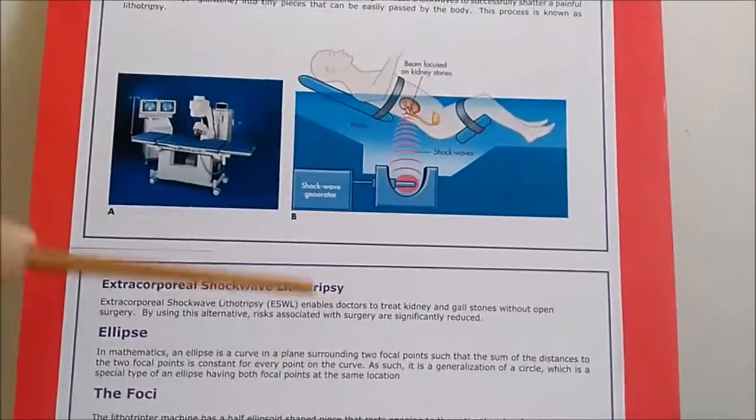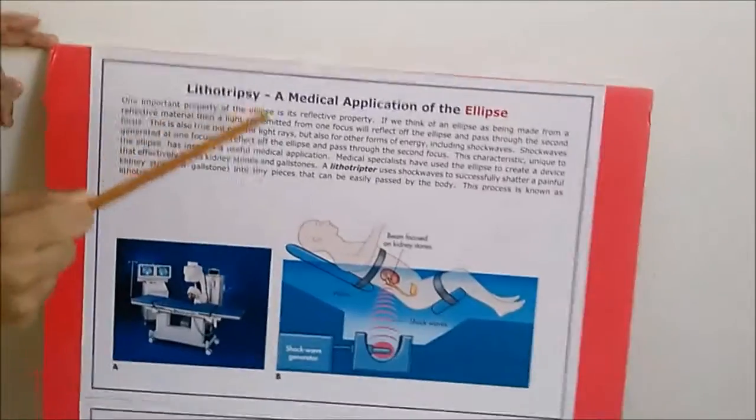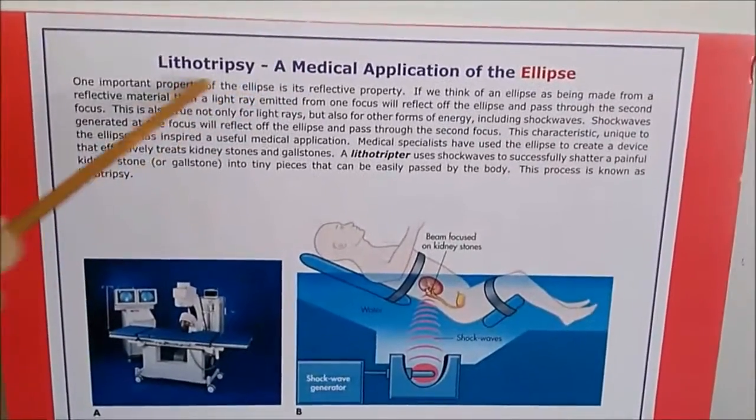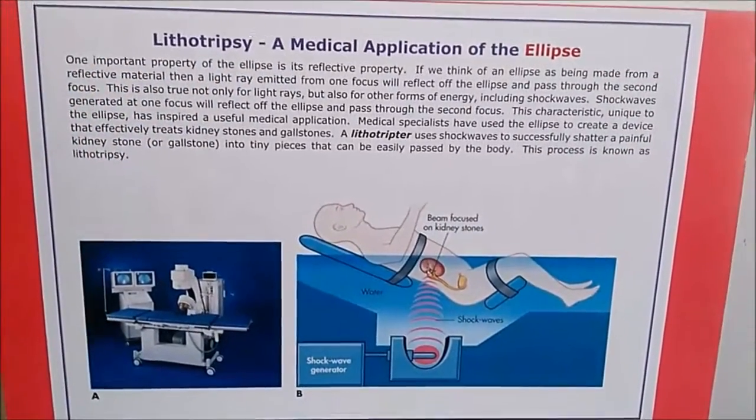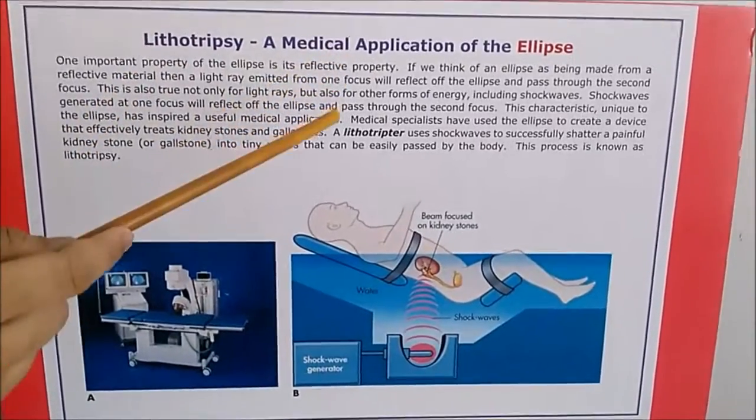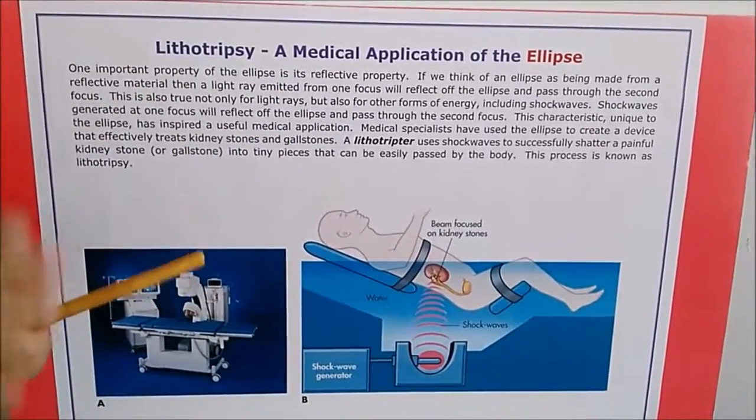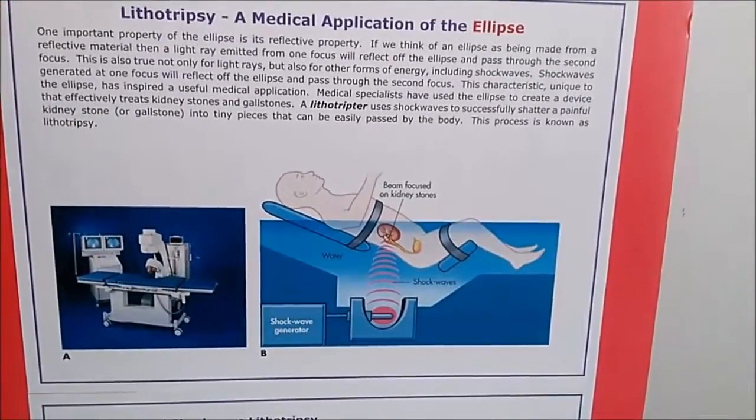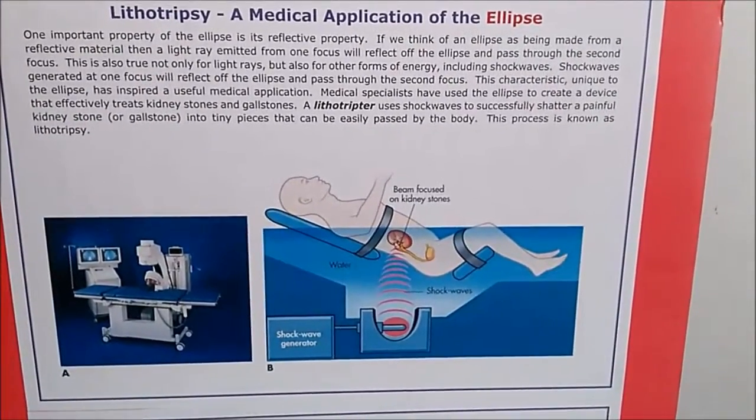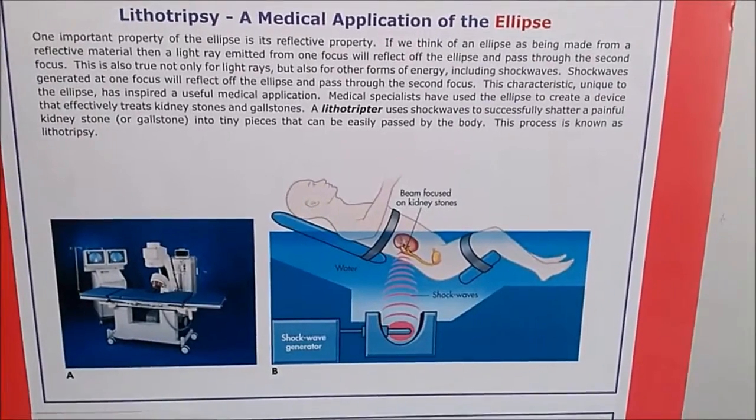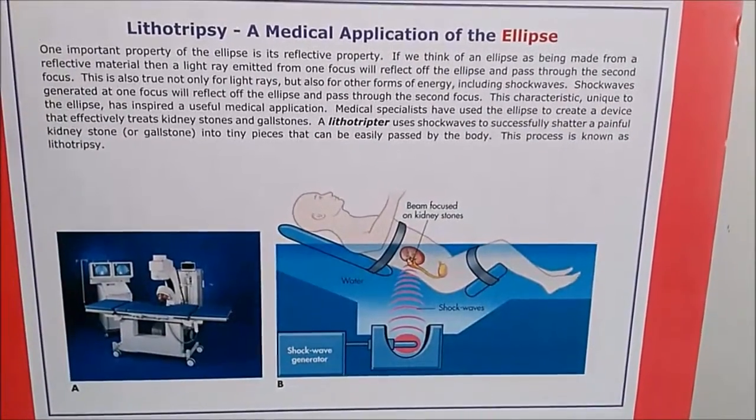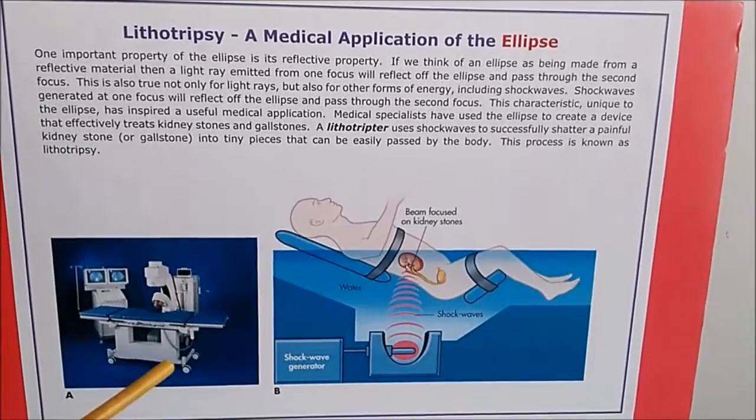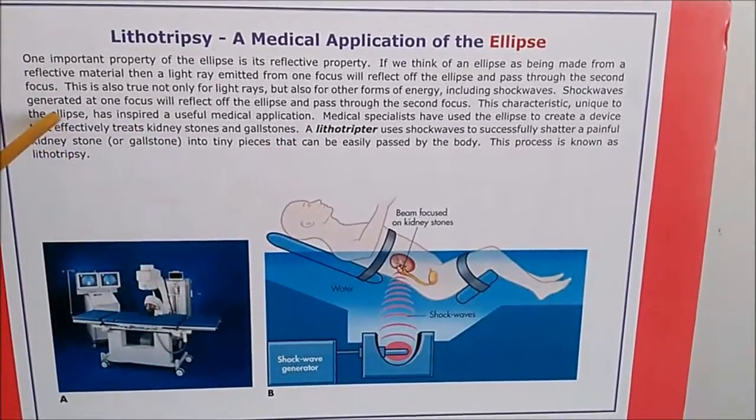Now let us look at the next property of the ellipse. The one important property of the ellipse is its reflective property. If you position light rays in one focal point, it will pass through the other focal point. This is the reflective property. Even shock waves can pass through. This is unique only to the ellipse.